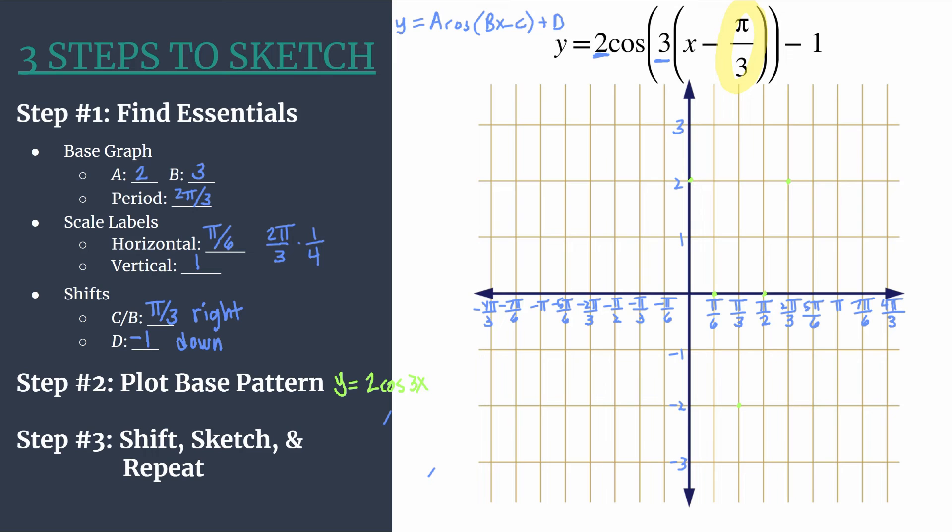So starting with our Y intercept, let's move right pi over three and I'll do dash marks just so we can see that. Right pi over three and down one. And we'll do that for each of our green points. And as we find those final points, we can make them a little bigger or darker. So we know these are our final points.